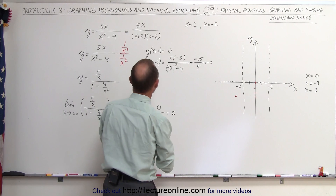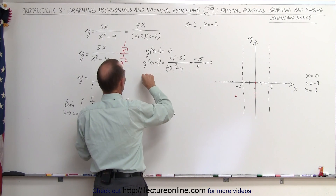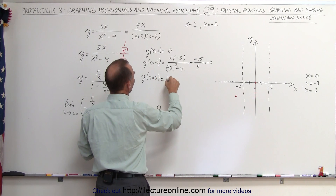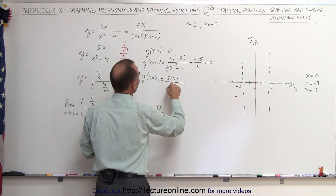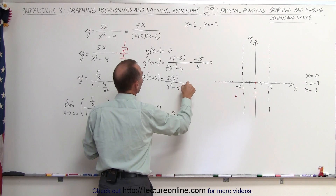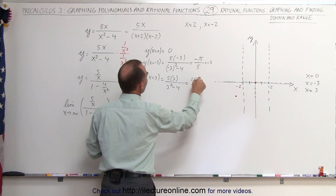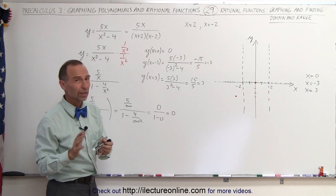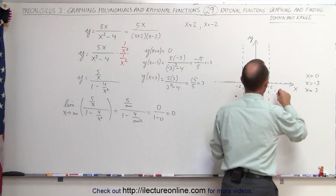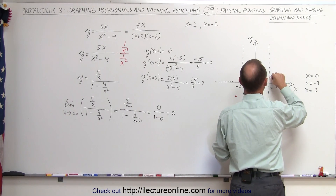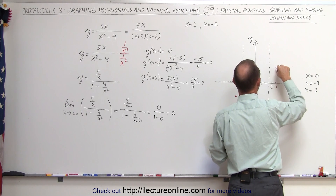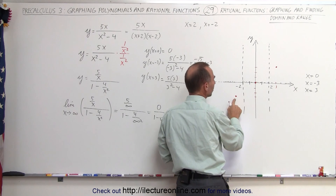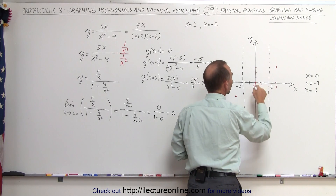When x = 3, y equals 5 times 3 divided by (3 squared minus 4), which is 15 over 5, giving a positive 3. So when x = 3, y = 3, placing that point at (3, 3). We know the graph goes through this point, this point, and this point.